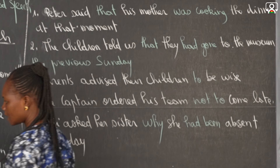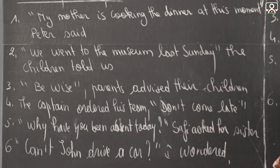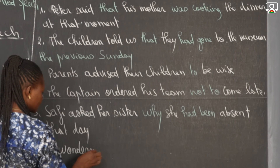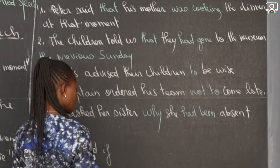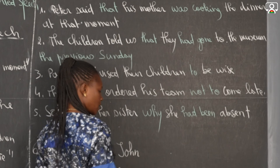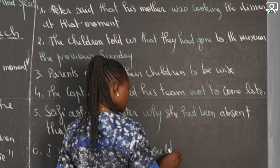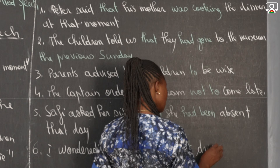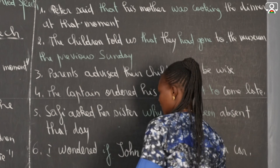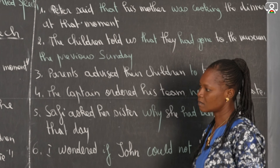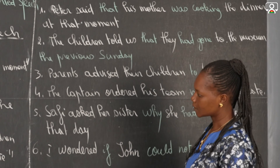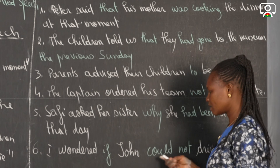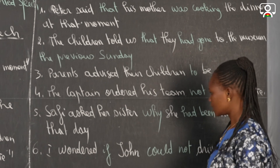The last sentence: 'Can't John drive a car?' I wondered. We have: I wondered if John could not — or couldn't — drive a car. 'Can't' is a modal verb, and since this is a yes or no question, after the reporting clause I use 'if,' followed by the subject and the appropriate modal modification.